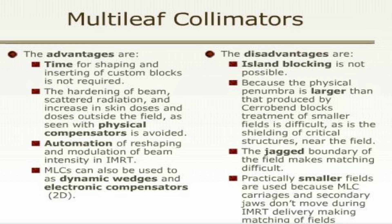Disadvantages of multi-leaf collimators include: isodose blocking is not possible because the physical penumbra is larger than that produced by Cerrobend blocks. Treatment of smaller fields is difficult, as is the shielding of critical structures near the field. The jagged boundary of the field makes matching difficult. Practically, smaller fields are used because multi-leaf collimator carriages and secondary jaws don't move during IMRT delivery, making field matching difficult.